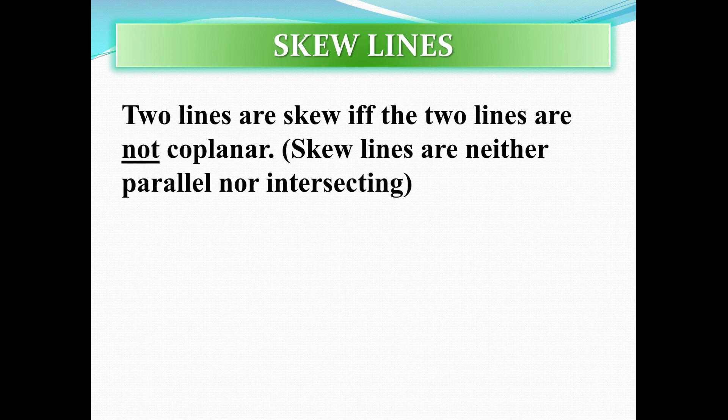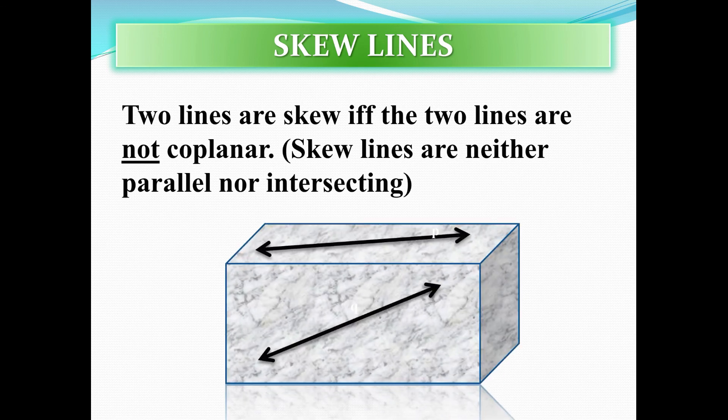The definition of skew lines is for lines in space. Two lines are skew if and only if the two lines are not coplanar. Skew lines are neither parallel nor intersecting. The two lines cannot be in the same plane — they have to be in different planes. For example, you can have line L in one plane and line M in a different plane. The two lines are not parallel, they don't intersect, and therefore they're called skew lines.